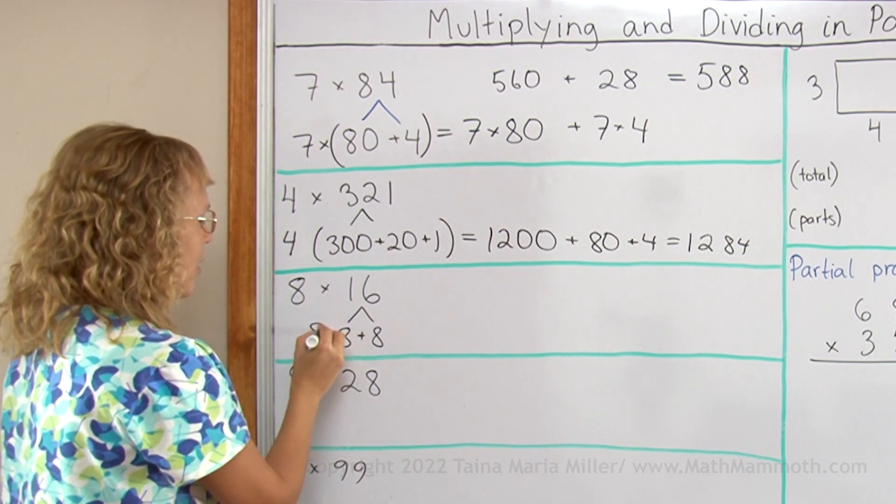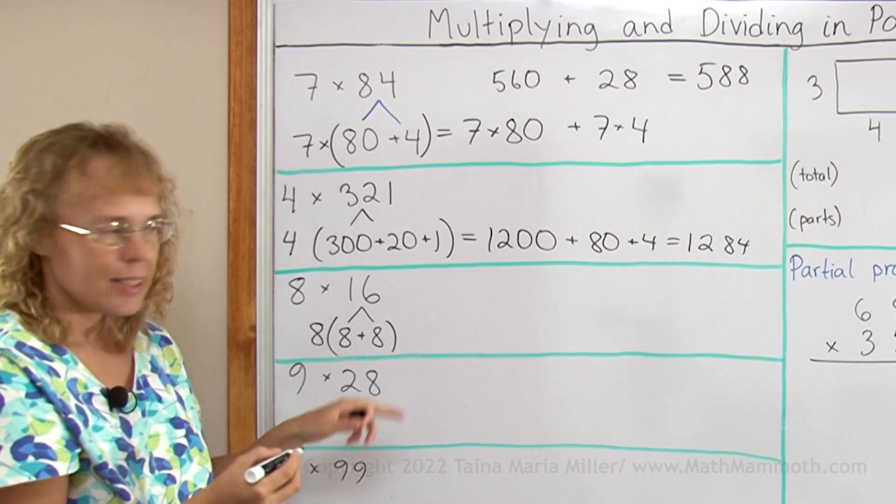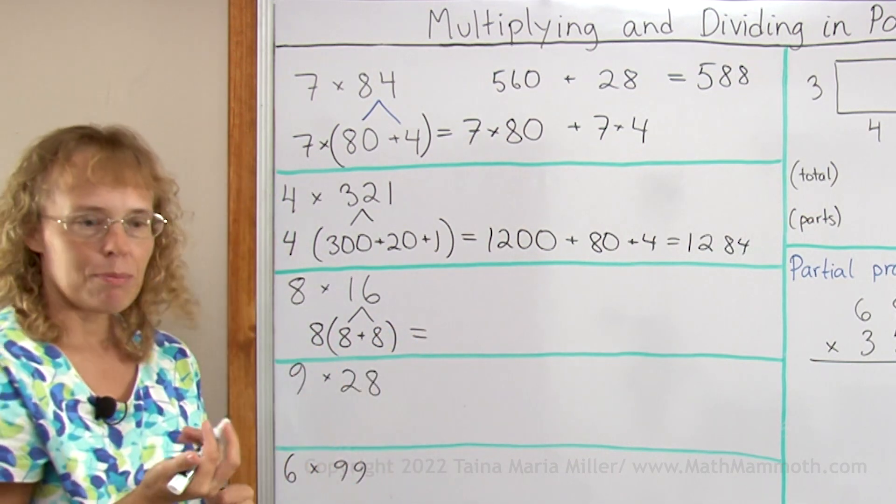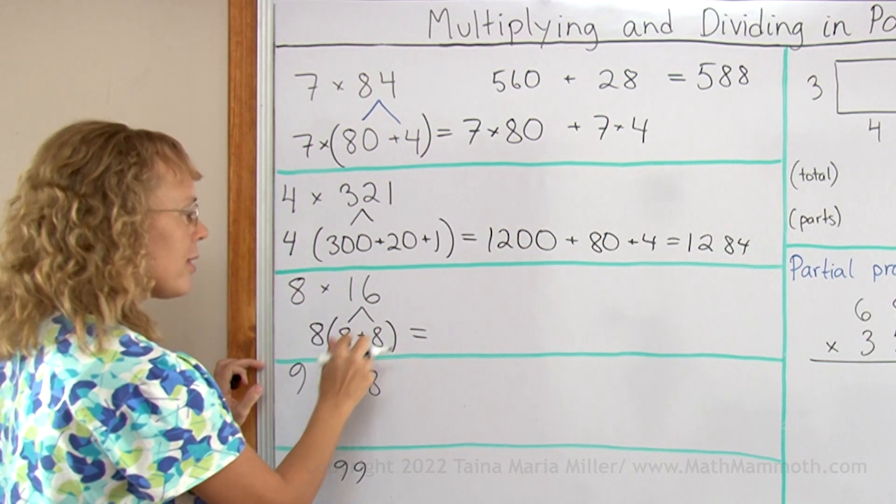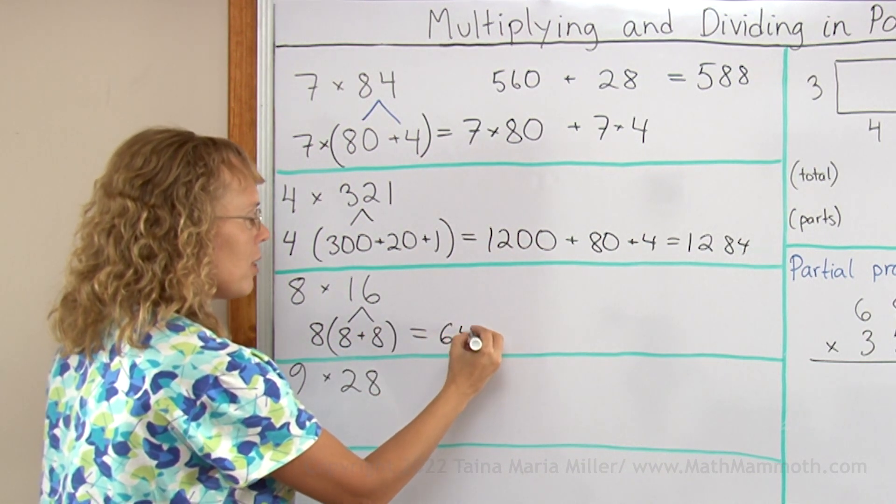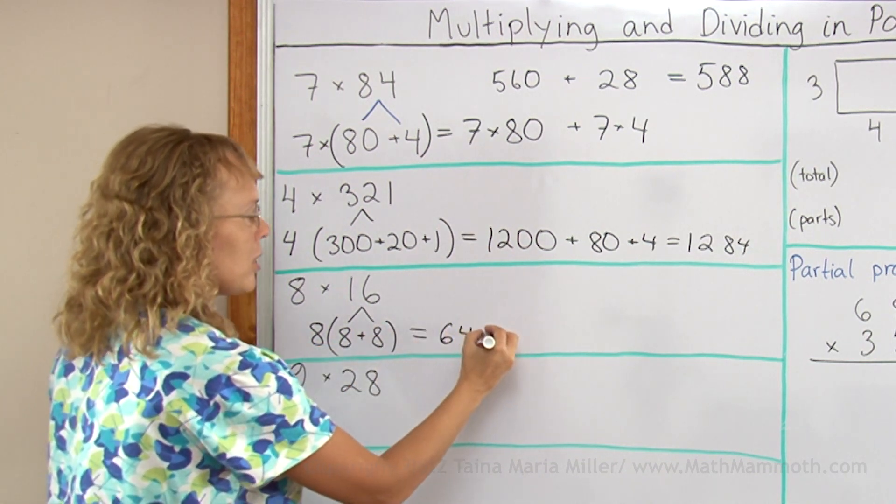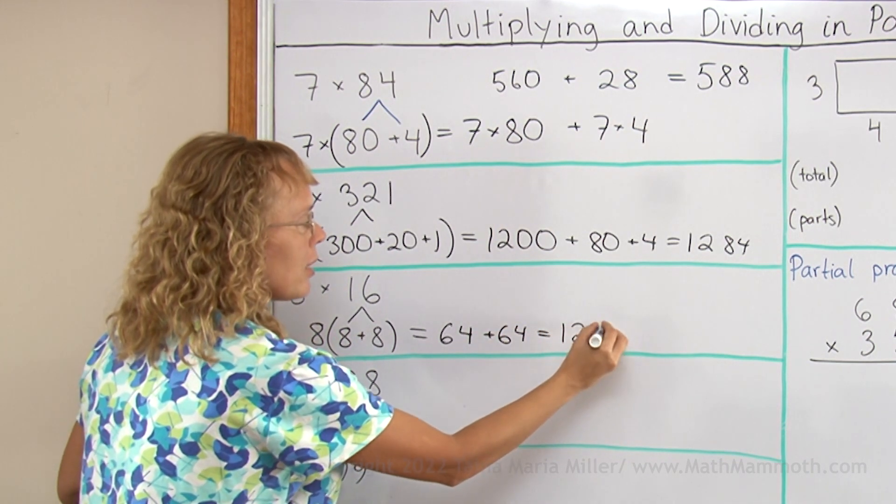So I would have here 8 times 8 plus 8. And now when I'm multiplying parts, I get 8 times 8 which is 64, and then 8 times 8 which is 64. And so that is 128.